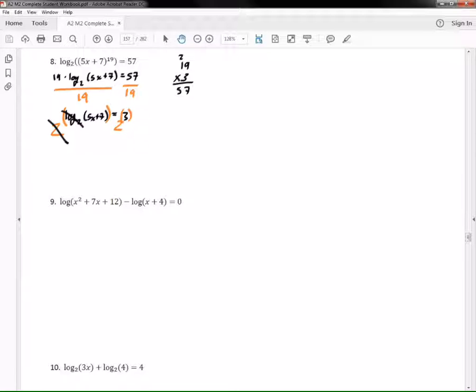Because they have the same bases, on the left side the log pretty much cancels out with the base because they're inverse operations of each other, and then we have 5x plus 7 on the left side. On the right side we have 2 times 2 times 2 which is 8.